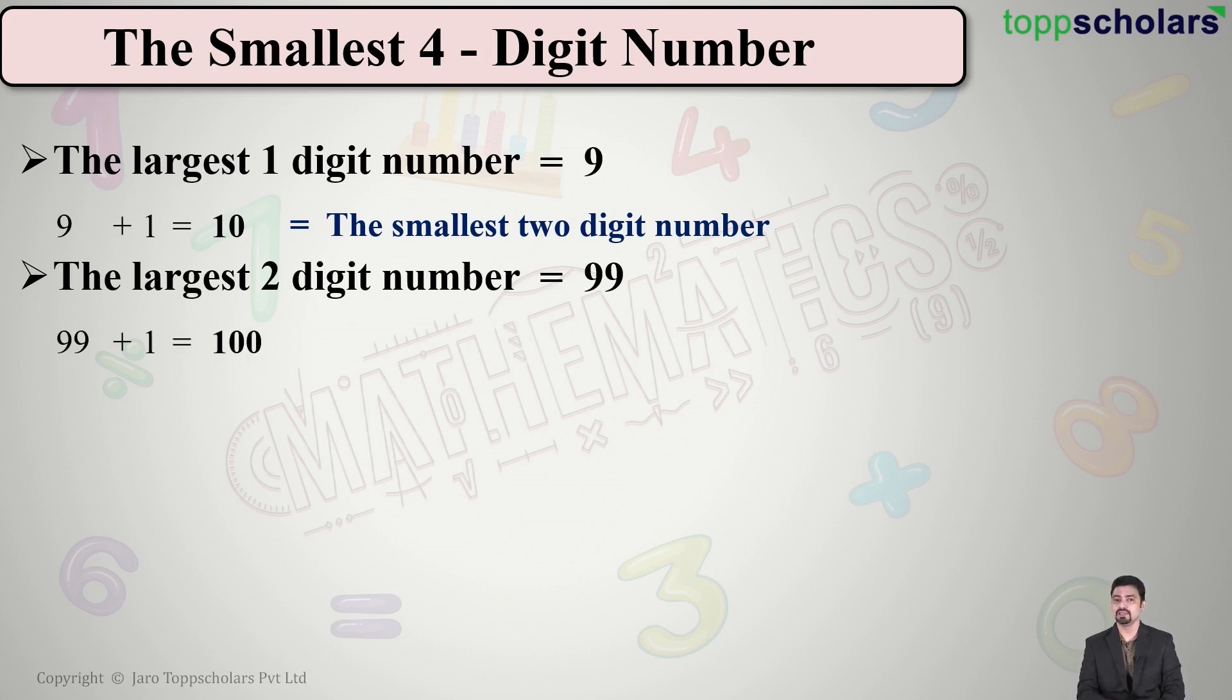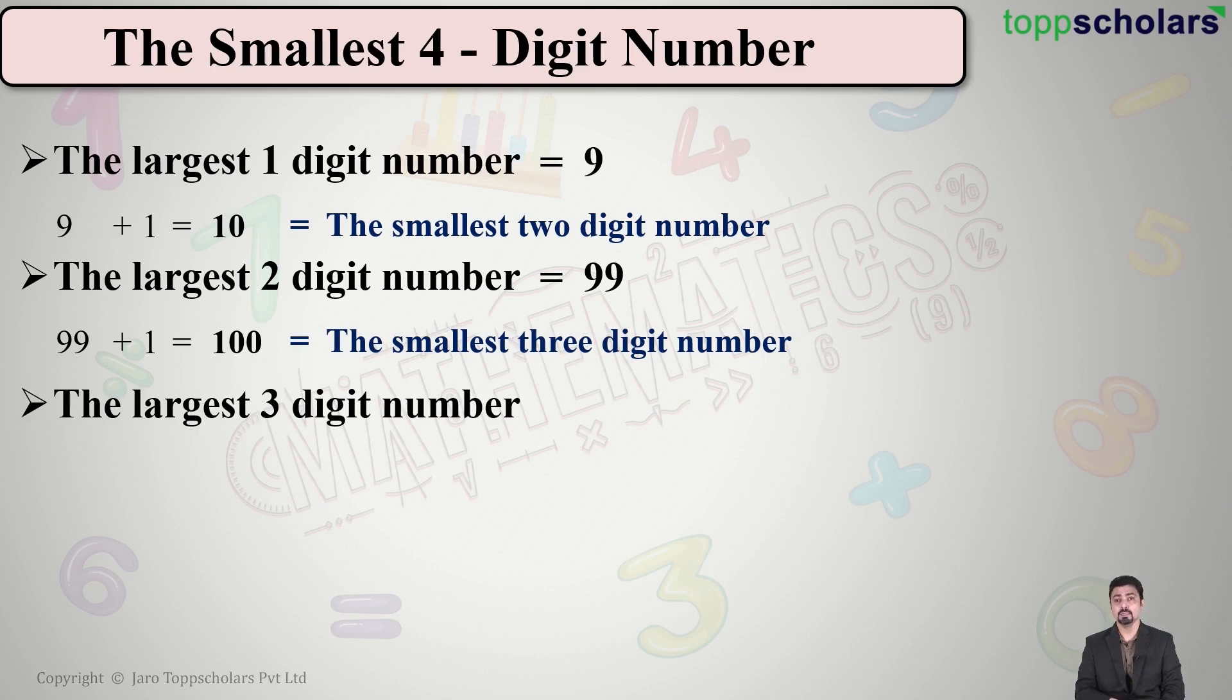The answer will be 100, which is the smallest three-digit number. Let us do the same for three-digit numbers. The largest three-digit number is 999. Please add one to this number. So 999 + 1, we get our answer as 1000. Yes, this is our smallest four-digit number.